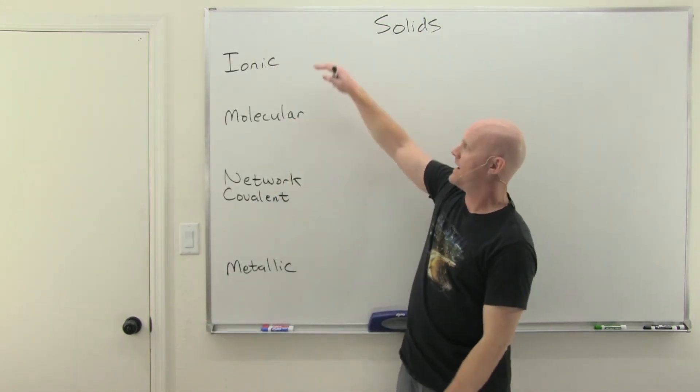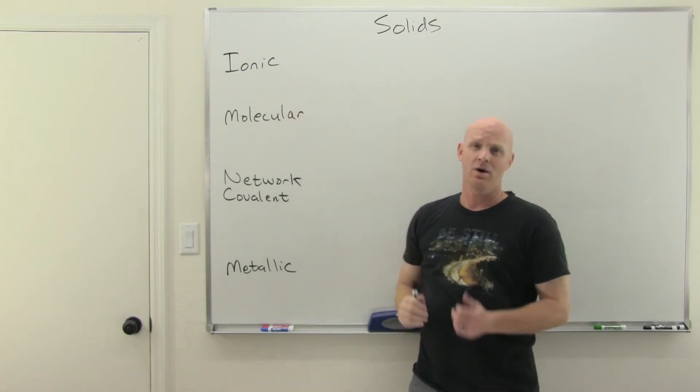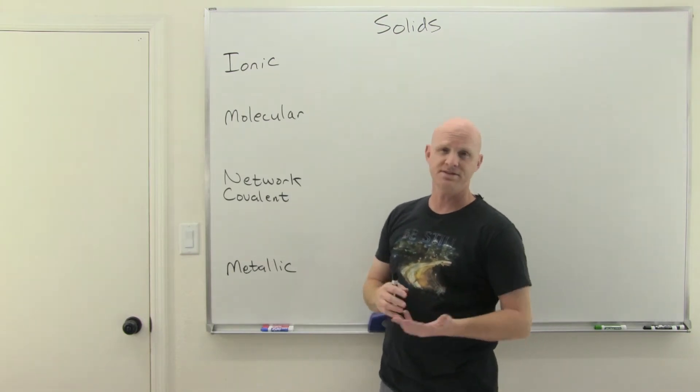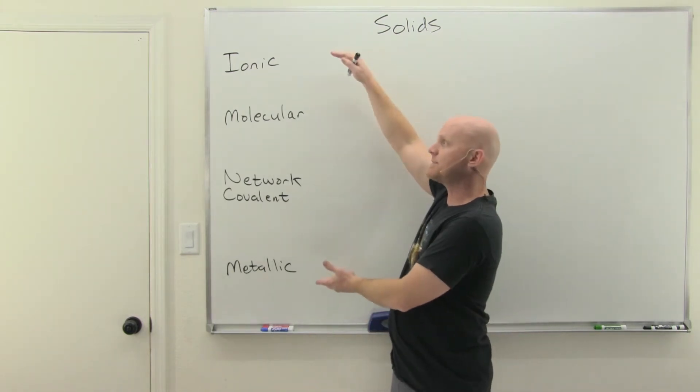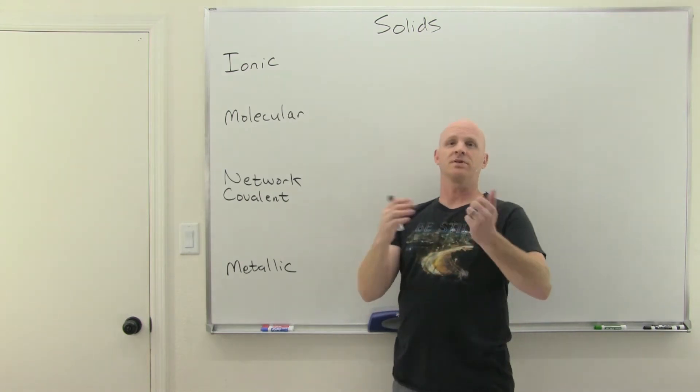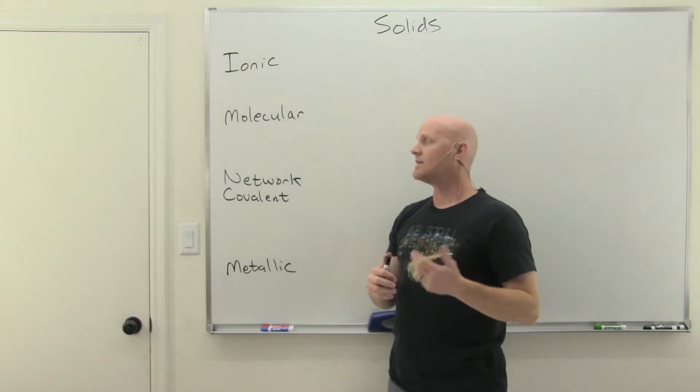Now we want to briefly look at the four different types of solids: ionic, molecular, network covalent, and metallic. We've looked at these before back in our lesson on bonding and identifying different types of substances. We want to talk about these different types of solids and relate some of those characteristics back. We want to identify: Are these typically amorphous? Are they typically crystalline? What's holding these structures together? Things of this sort.